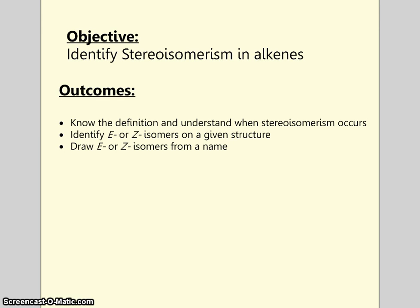The objective for today's video is to identify stereoisomerism in alkenes. The outcomes I want you to take away are: know the definition of stereoisomers, understand when stereoisomerism occurs, have the ability to identify E and Z isomers on a given structure, and be able to draw E and Z isomers from the name of a compound in both skeletal and displayed form.